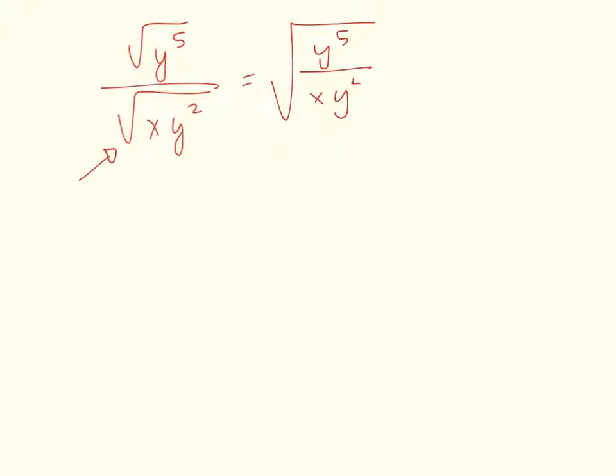And since those are both under the square root, these guys here, they're both y's, I can simplify them. If I'm dividing common bases, I subtract their exponents. So, this would be y⁵ over y², that would be y³ on the top, and on the bottom, x.